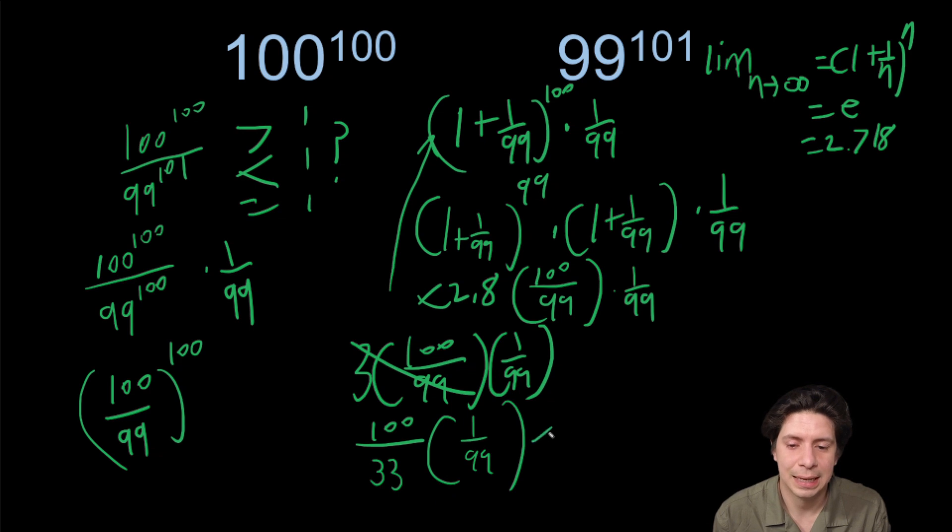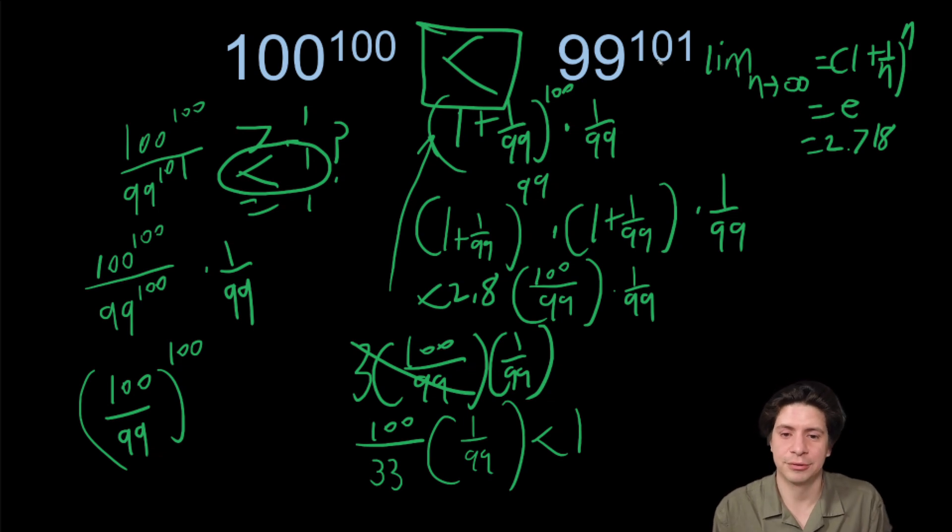And that's clearly a bigger bottom than the top, so that would be less than 1, which means that 100 to the 100 over 99 to the 101 is less than 1, which means 100 to 100 is less than 99 to 101. And that just shows the power of powers. It's actually a lot less than 99 to 101.